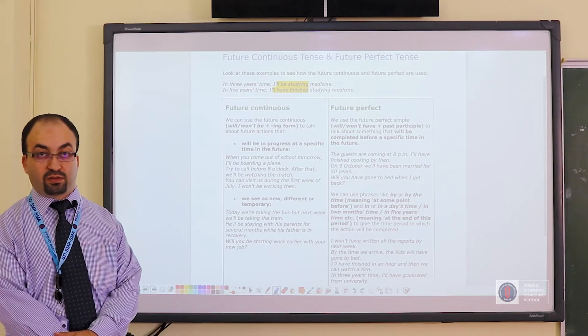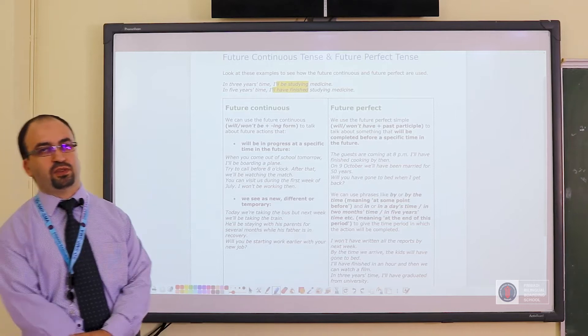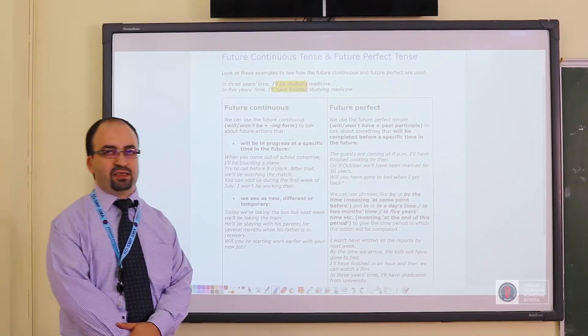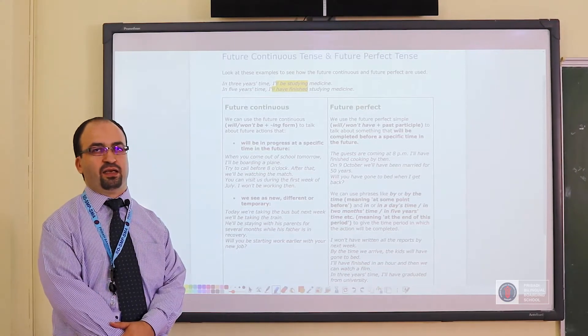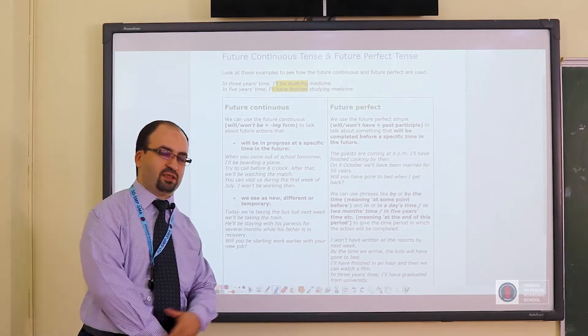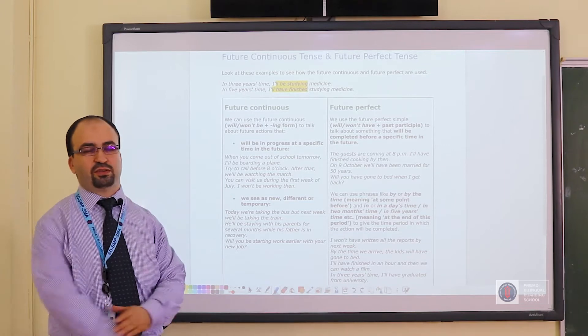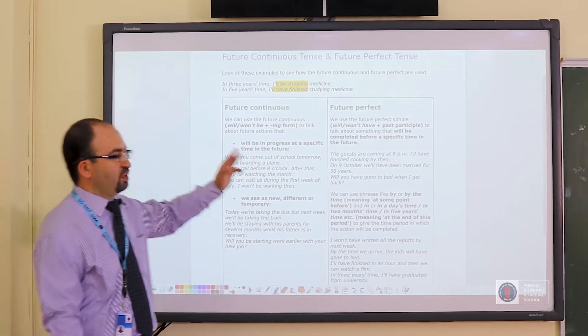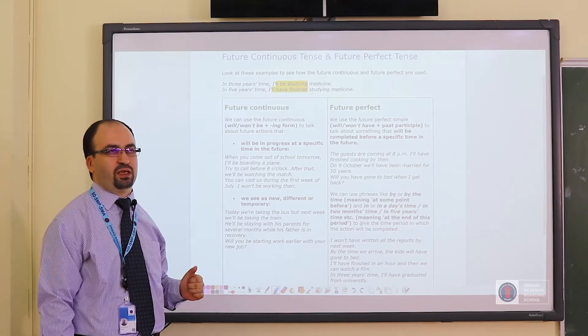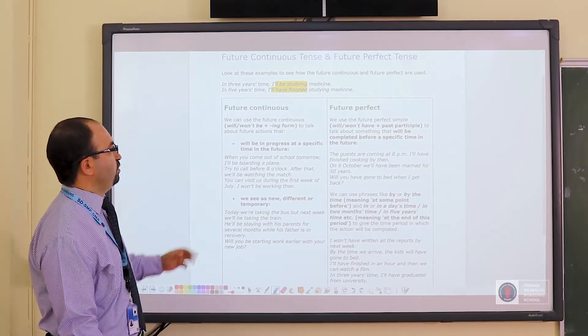One will be future continuous tense, and the other one is future perfect tense. As the name suggests, both are in the future. Continuous means it will still be happening in the future, and perfect means it will have been completed in the future.